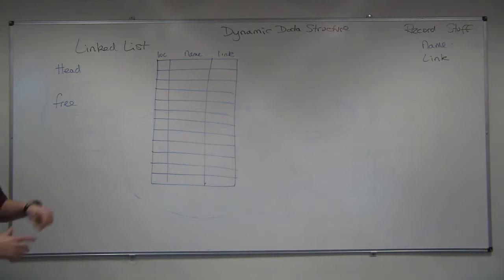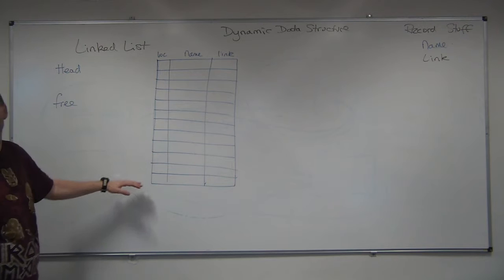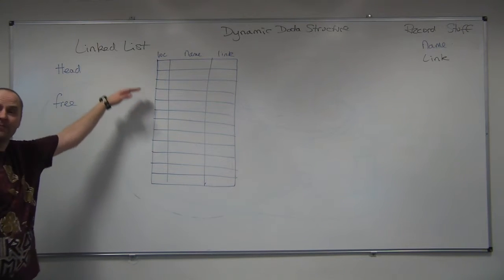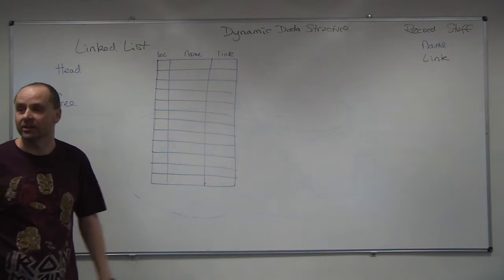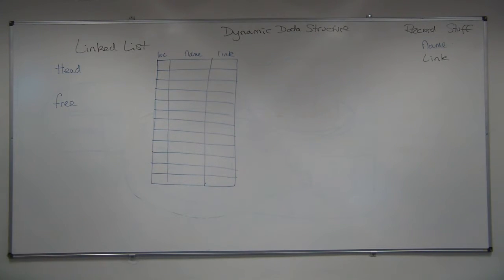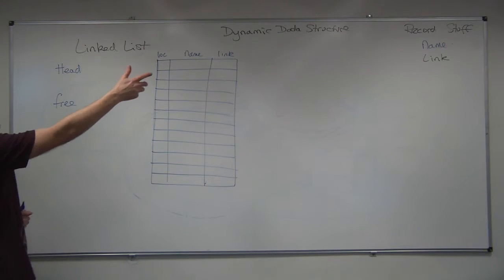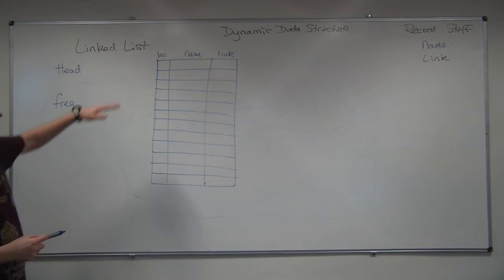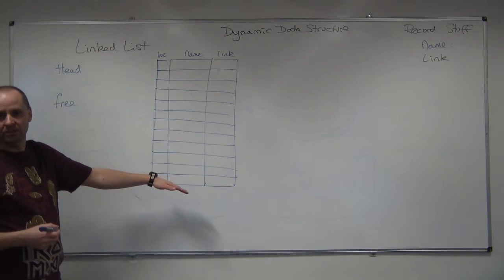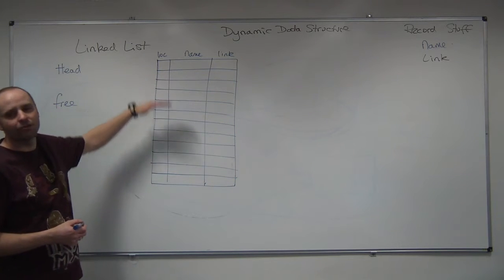What we're going to do here is show how we can use a static structure with a fixed number of spaces to build a linked list. If we do it this way, we're not going to be asking the operating system for space to record our new things. So when we do the names, we'll actually be using this structure. We've got effectively an array of records.